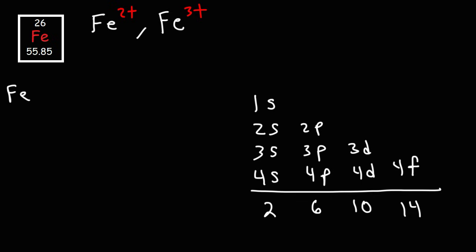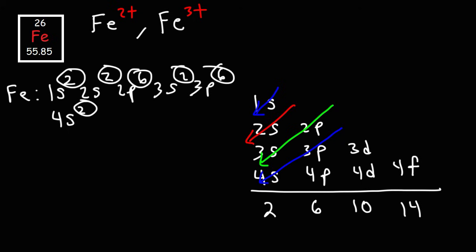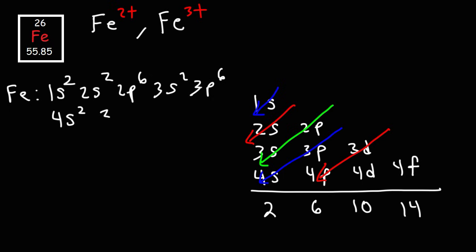Let's write the configuration for an atom of Fe, which has atomic number 26. Starting with 1s2, 2s2, 2p6, 3s2. Then 3p6, 4s2 — that gives us a total of 20. We need 6 more, so we stop at the 3d level with 3d6. This is the ground state electron configuration for an atom of iron, Fe.